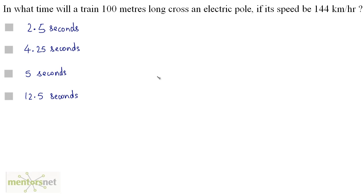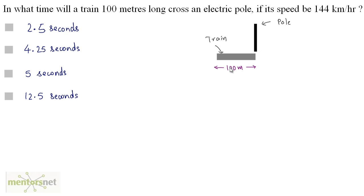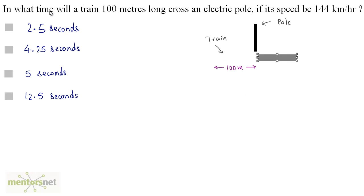In what time will a train 100 meters long cross an electric pole if its speed be 144 km per hour? The situation is like this: you have a pole and a train which is 100 meters long. To cross this pole, the train will have to cover the distance of its own length. That's when we calculate the time for this train to cover 100 meters.